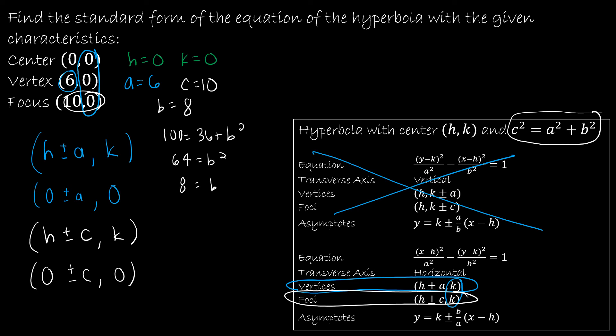So now I have everything I need. I'm just going to plug everything right into this equation. So I have X minus 0, or just X squared, over A squared, which is 6 squared, or 36, minus Y minus K. K is 0, so it's just Y squared, divided by B squared. B is 8, so that's 64, is equal to 1.